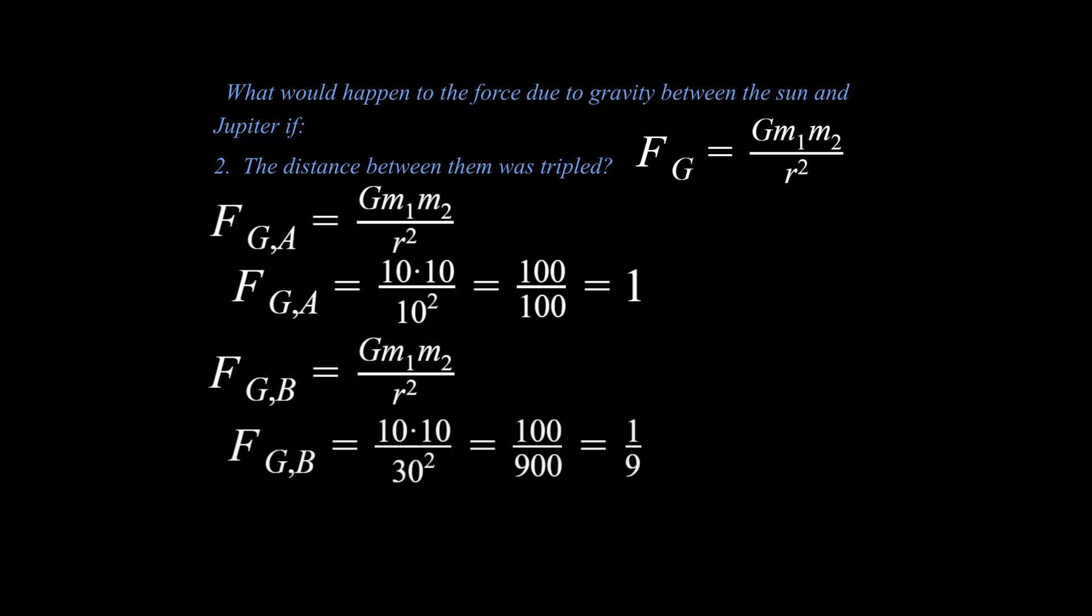Hopefully you're able to come up with the idea that we're talking about the distance here. Distance is in the denominator, and it's going to be three times as great. I did mention before, and I want to stress, that we cannot ignore these power rules, these exponents we have to leave in. And so 30 squared is 900, and you end up with a relative value of one ninth.